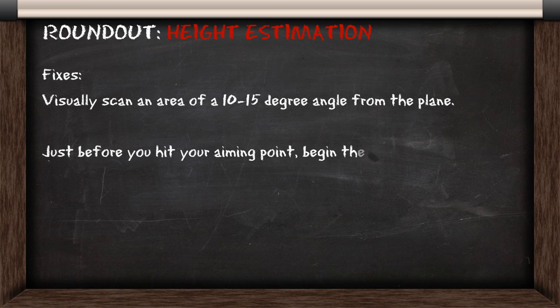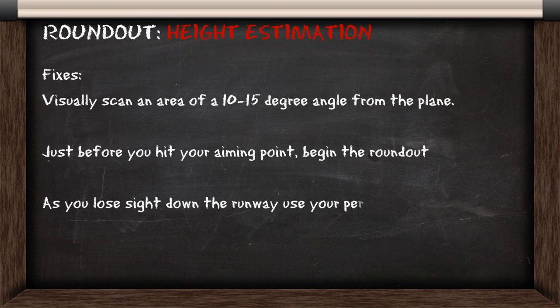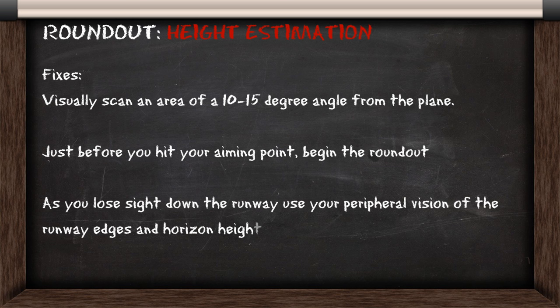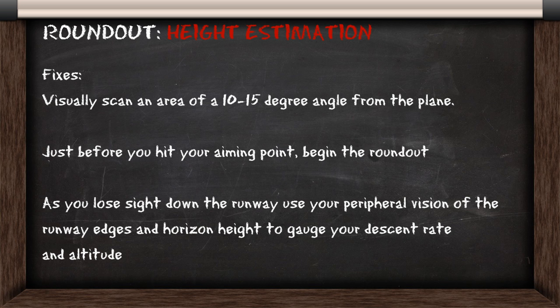To fix this you should be visually scanning an area of about 10 to 15 degrees angle from the airplane. Just before you hit your aiming point you begin the round out. As you lose sight of the runway, you use your peripheral vision of the runway edges and horizon height to gauge your descent rate and altitude.